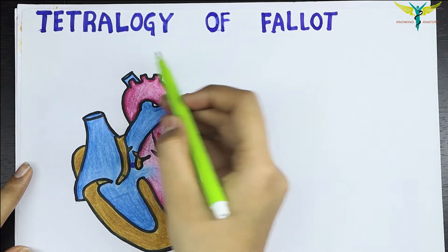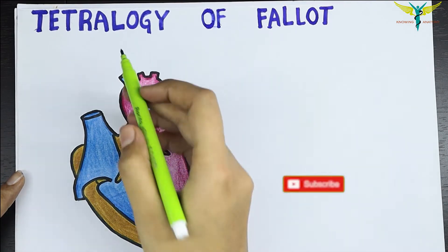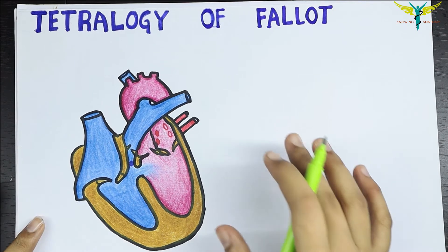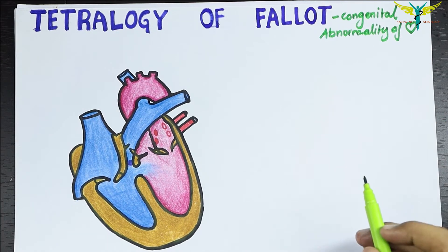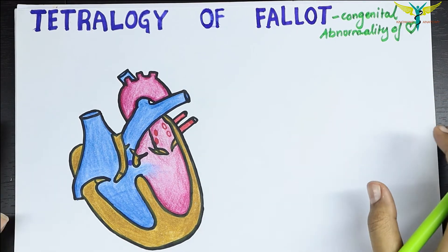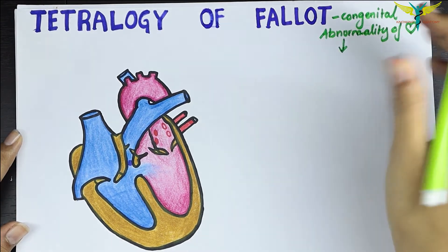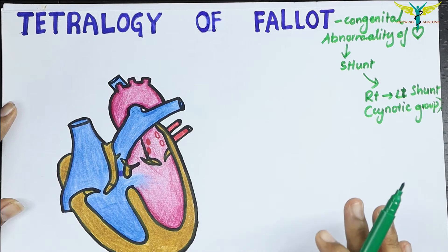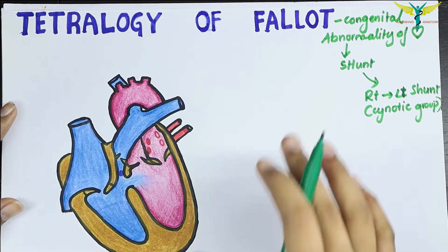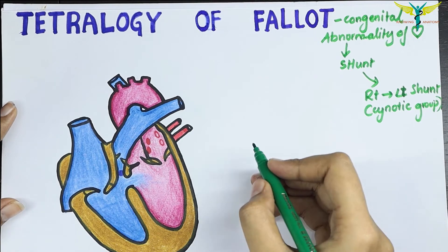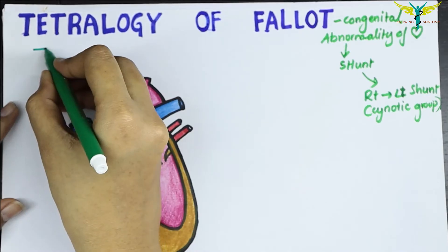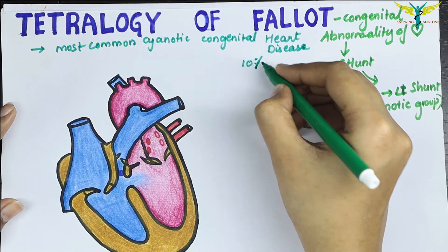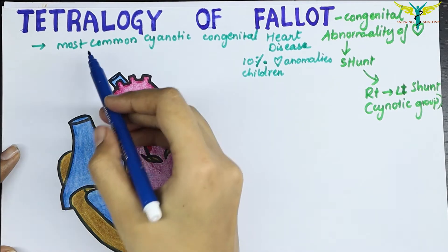In this video, let's learn about the Tetralogy of Fallot. It comes under congenital heart diseases — abnormalities of the heart present at birth. It mainly falls under the shunt group of heart abnormalities, specifically the right-to-left shunt, or the cyanotic group. Tetralogy of Fallot is the most common cyanotic congenital heart disease, found in about 10 percent of children with heart anomalies.